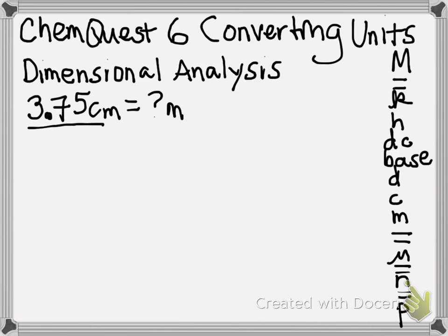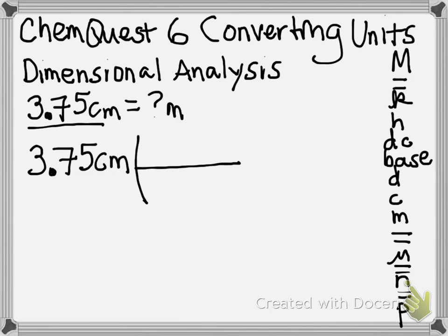We're always going to start with our given, and here we're converting. We always start with our given. The idea is that we're treating this like it's a fraction — if it's easier for you to think of it as being over 1, that's fine. Centimeters are in the numerator, which means for them to cancel out, I'm going to need them in the denominator.